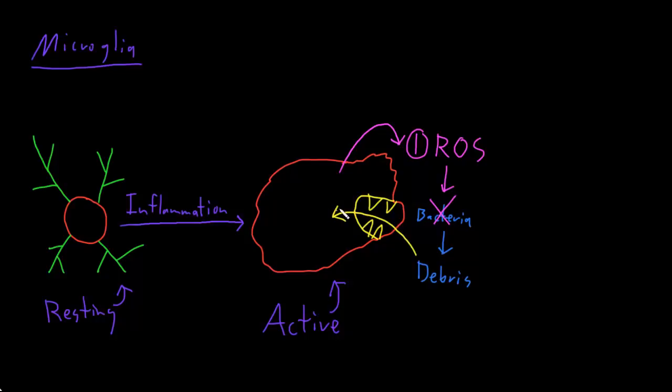It will take it inside its own cell and break it down into smaller pieces. So this is another main function of microglia, which is called phagocytosis. Phagocytosis, which means eating cells or eating debris, just like other types of cells do all over the body when they're like macrophages that look just like active microglia.